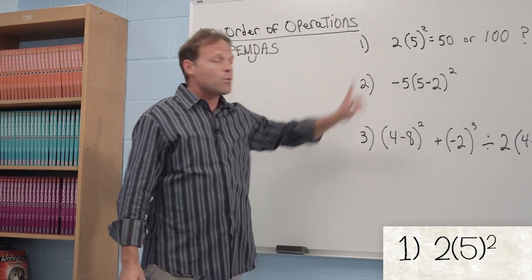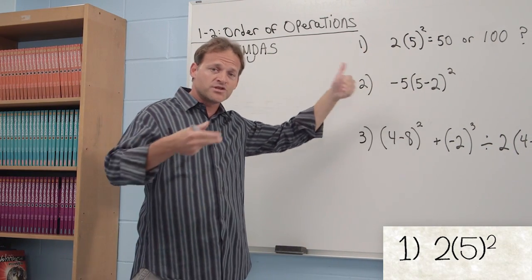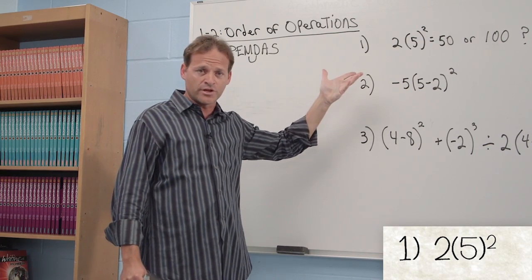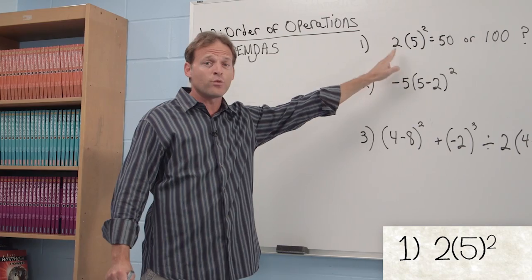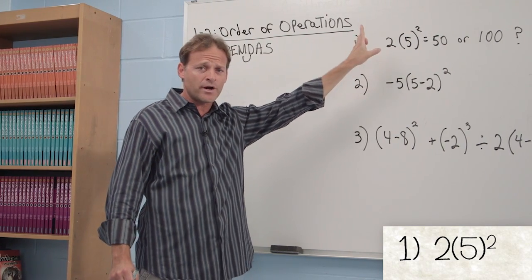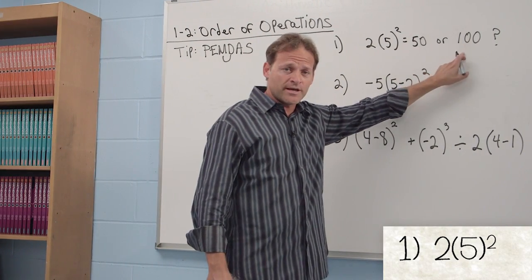Let's take a look. One person may wish to do this problem from left to right. That's the way we speak English. It seems reasonable enough. 2 times 5 squared. We're going to do 2 times 5, which is 10, and then 10 squared, which is 10 times 10, which equals 100. That is one possible answer, one plausible answer.